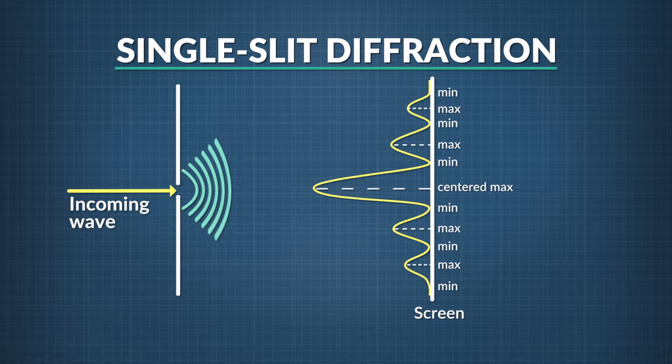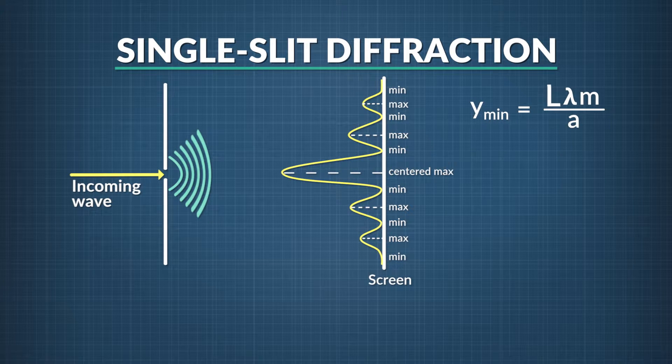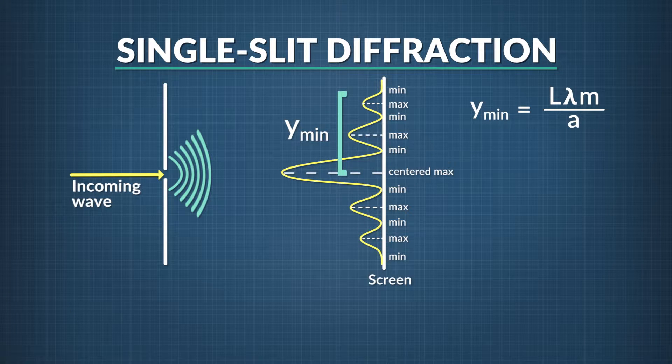When this is the case, we can approximate the position of dark spots, or minima, on the screen using this equation: y_min equals L times lambda times m divided by a. Y_min is the distance on the screen from the intensity minimum being considered to the center of the main peak.